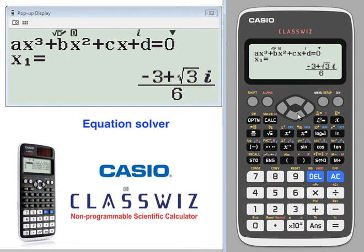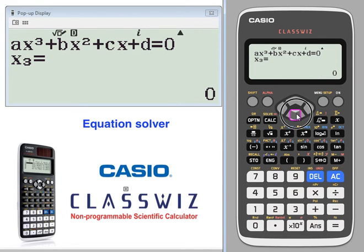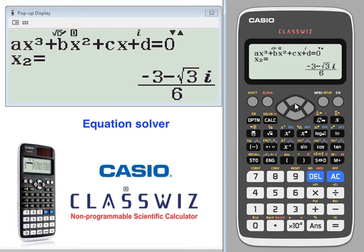Notice the solution that's given is the complex solution. If you use the arrow keys, you'll see all three solutions: zero, negative three, plus and minus the square root of three i over six.